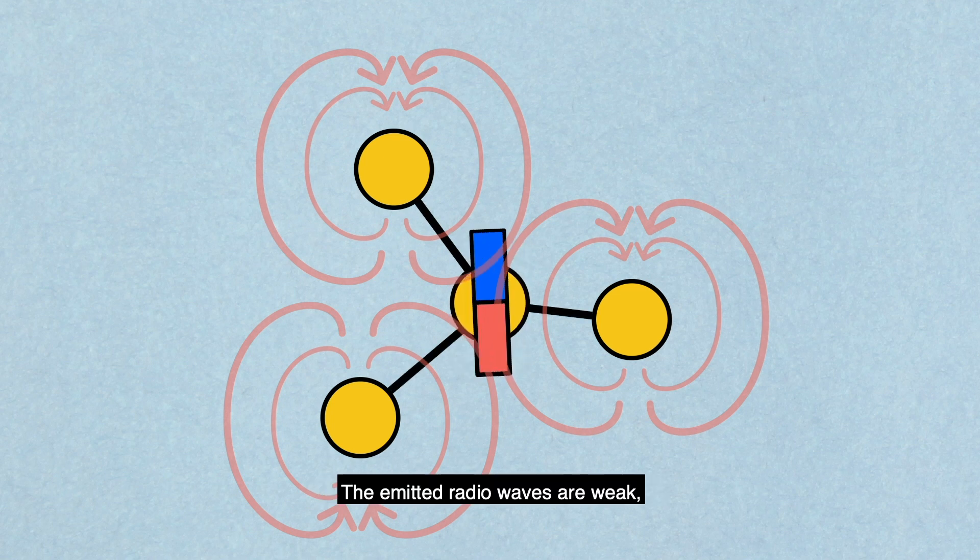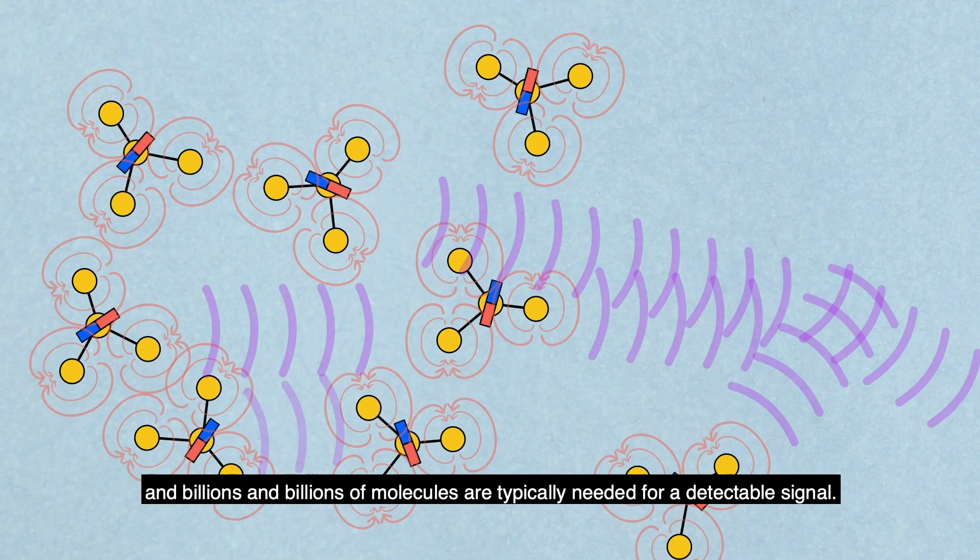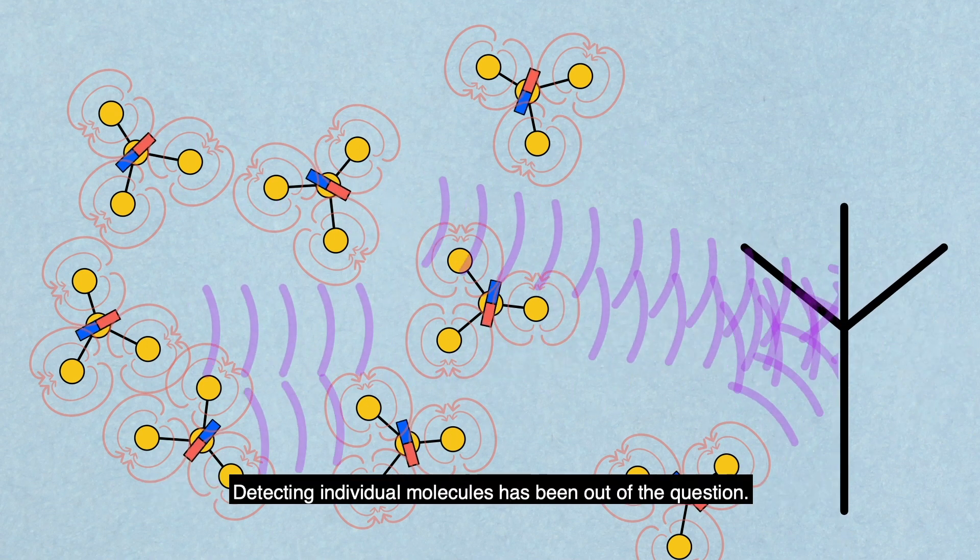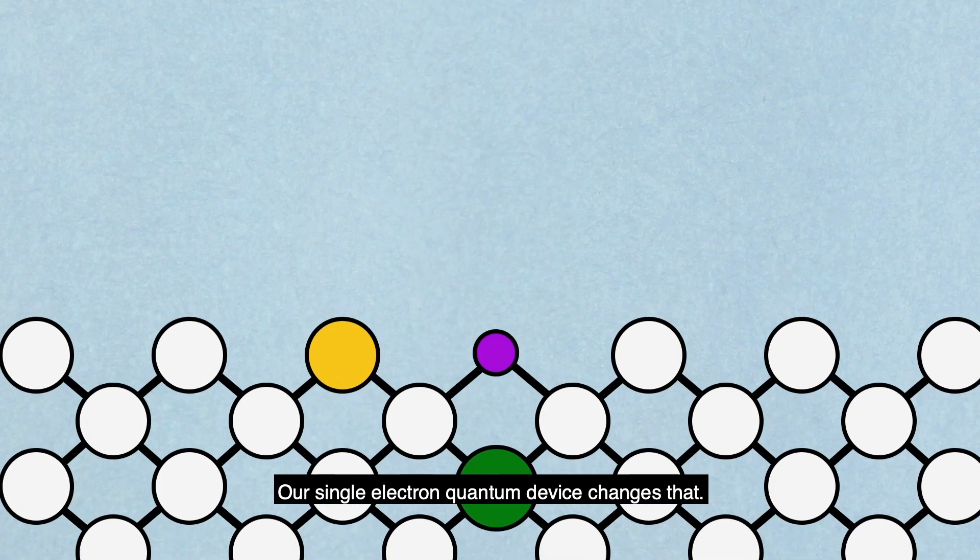The emitted radio waves are weak and billions and billions of molecules are typically needed for a detectable signal. Detecting individual molecules has been out of the question. Our single electron quantum device changes that.